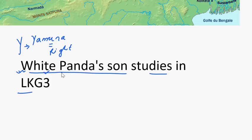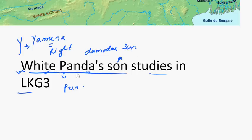In 'panda,' P stands for Punpun. And 'son' stands for Son. So in the sentence up to this point — White Panda's Son — these all represent right bank tributaries: Yamuna, Punpun, Damodar, and Son.